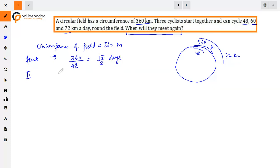The second cyclist covers 60 km in one day, so 360 divided by 60 equals 6 days. In this case, to find when they meet again, we need the duration each cyclist takes to complete one round for this type of question.